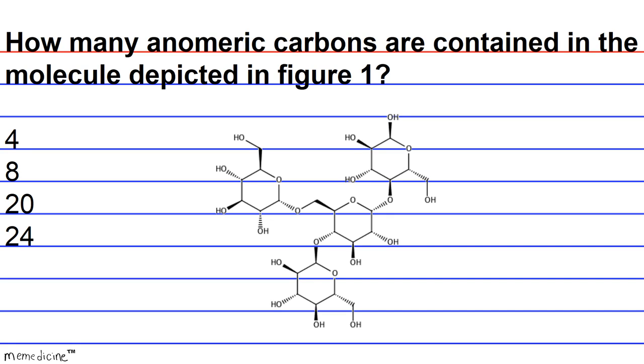Let's use a quick rule of thumb to decide how many anomeric carbons there are. Anomeric carbon is the stereocenter created at the carbonyl carbon of a carbohydrate when the molecule goes from the straight chain form to its cyclical form. The molecule depicted in figure 1 has four anomeric carbons.